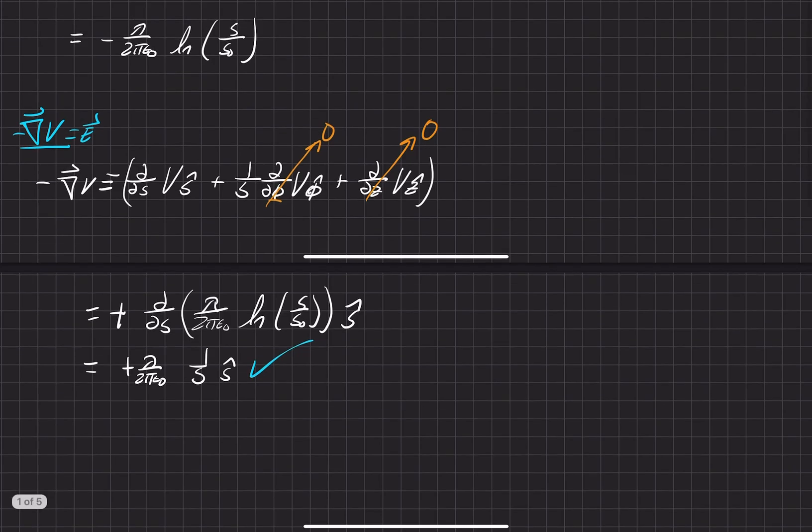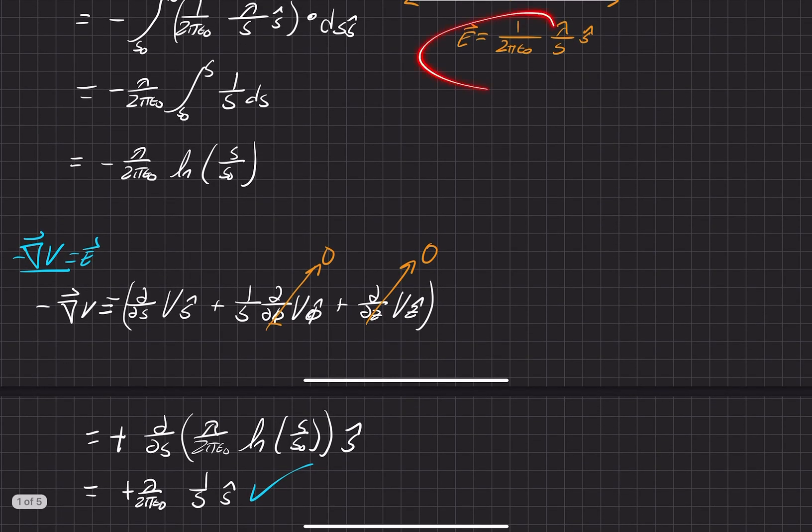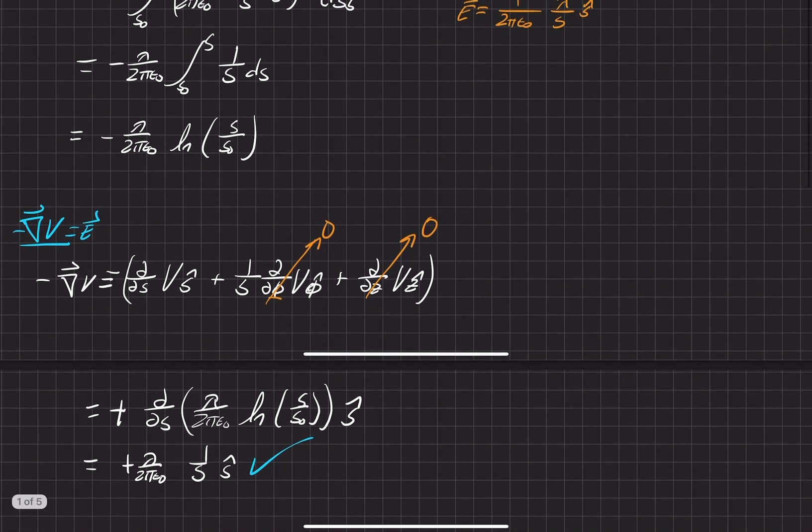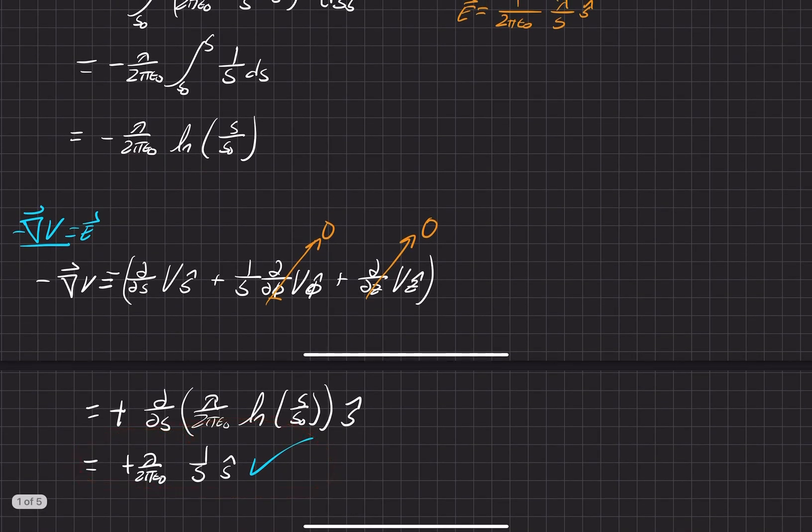And that, in fact, is our electric field that we originally had right here. So pretty cool how we can just take some scalar value. If we were originally given this, we can just take some scalar value with no information about directions. And we can know everything we want to know about the electric field for the system. Pretty cool.